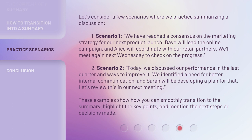Scenario 2: Today, we discussed our performance in the last quarter and ways to improve it. We identified a need for better internal communication, and Sarah will be developing a plan for that. Let's review this in our next meeting. These examples show how you can smoothly transition to the summary, highlight the key points, and mention the next steps or decisions made.